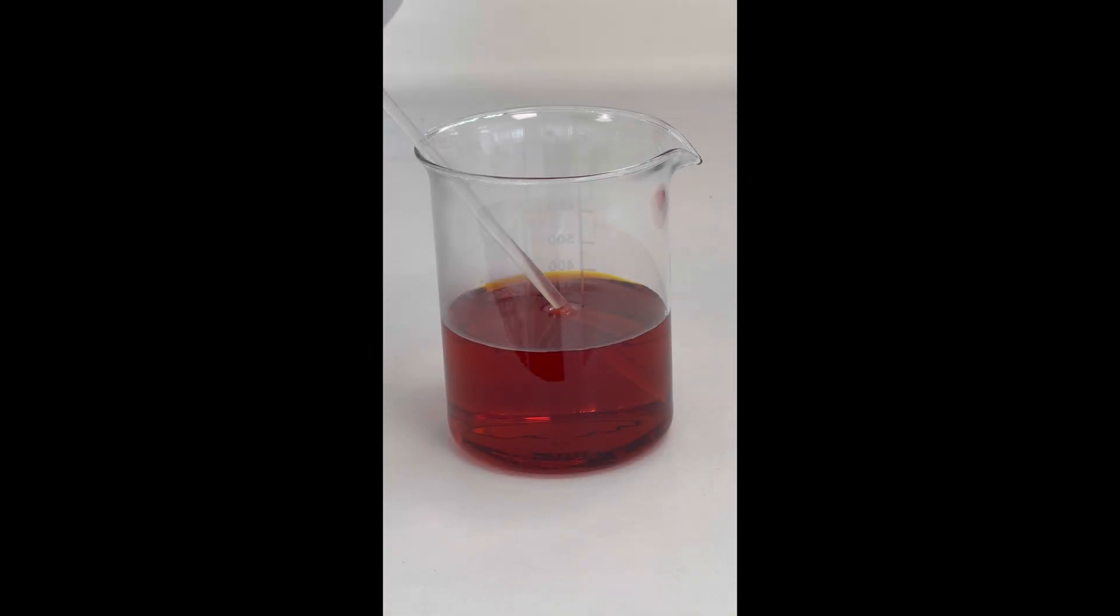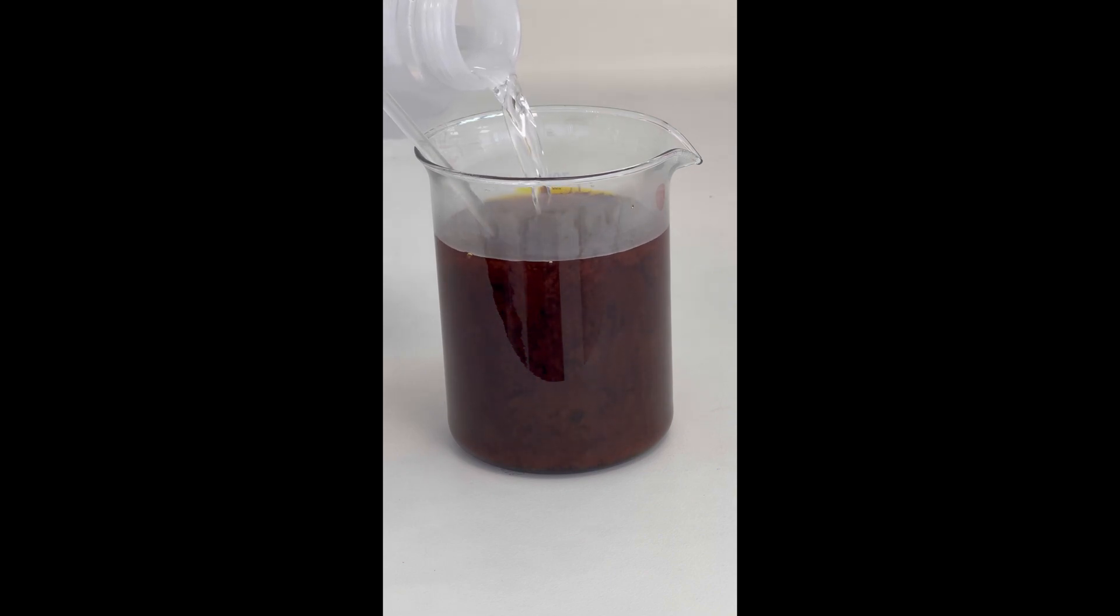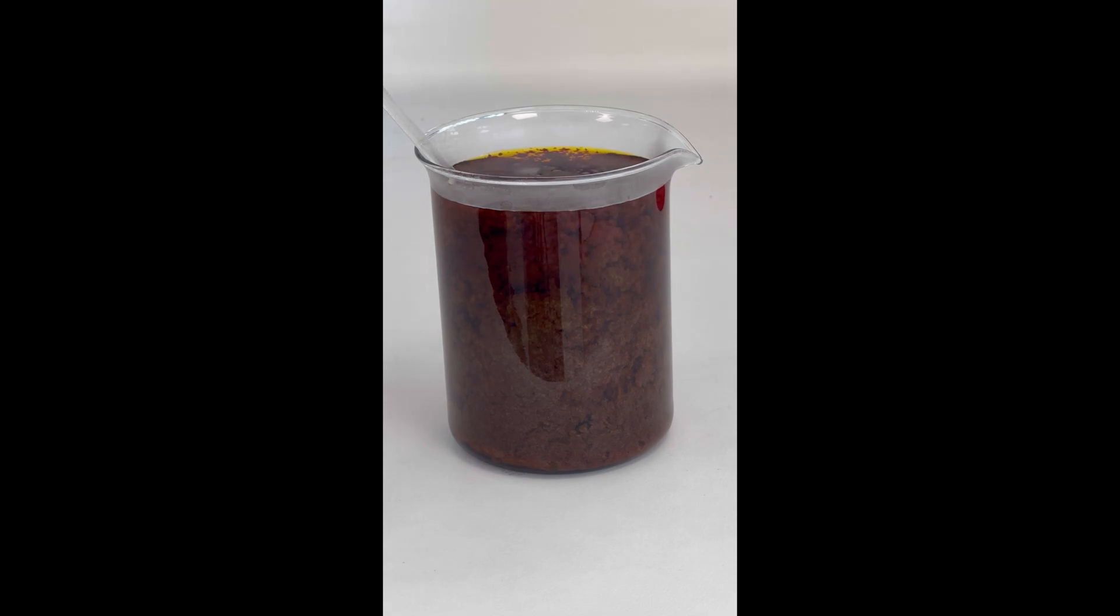In a separate beaker, we dissolve 50 grams of iron chloride hexahydrate in water. To this solution, we add potassium hydroxide until all the iron precipitates as iron-3-hydroxide.